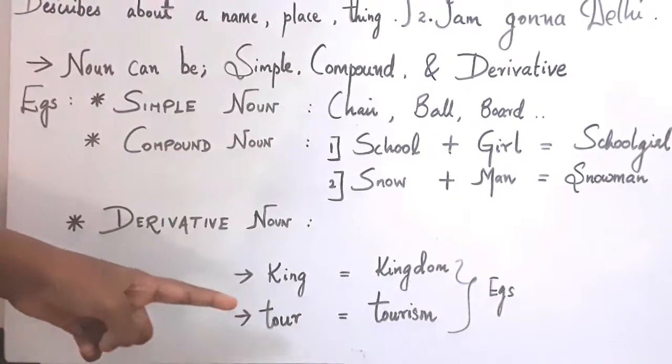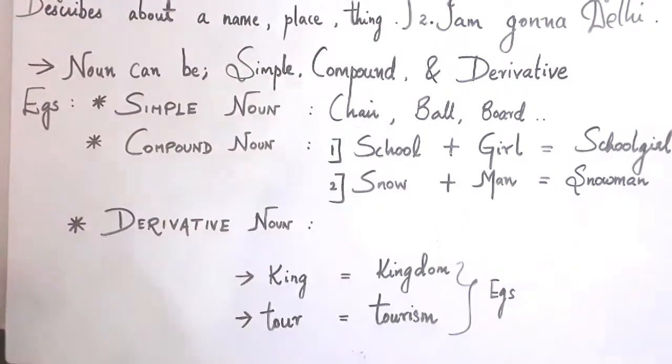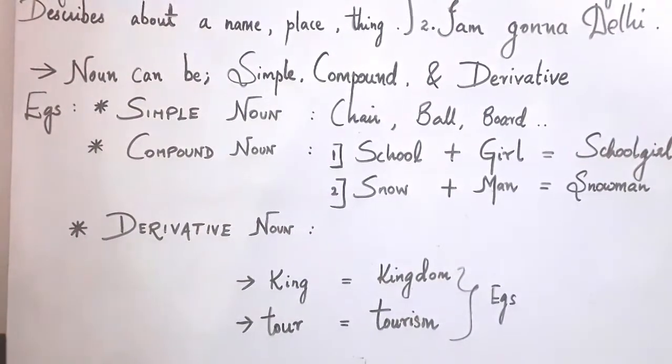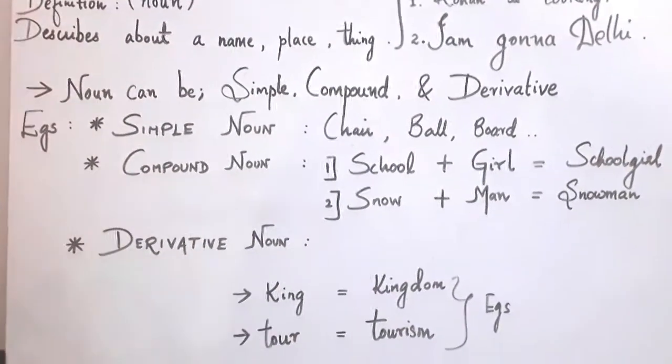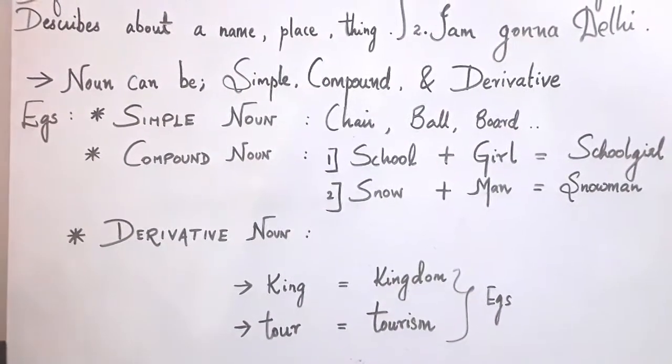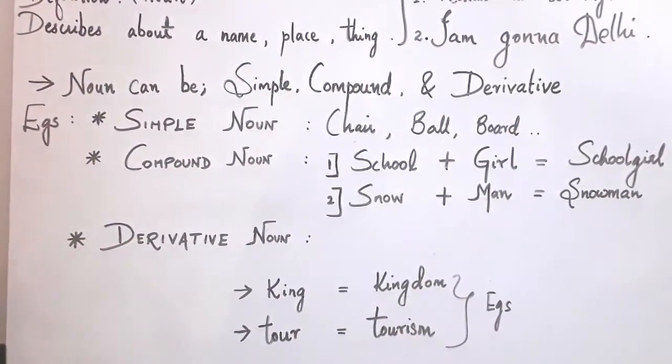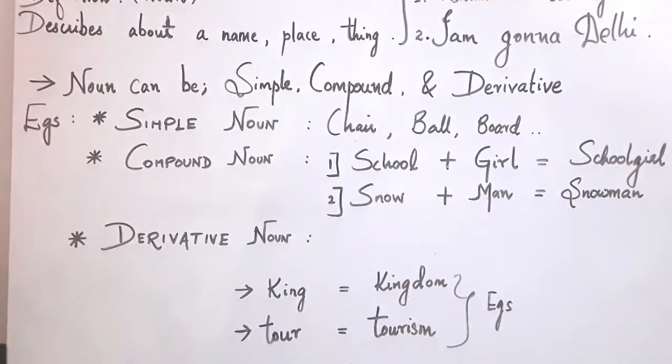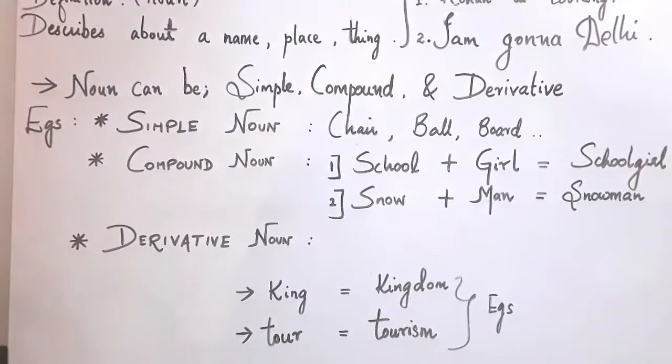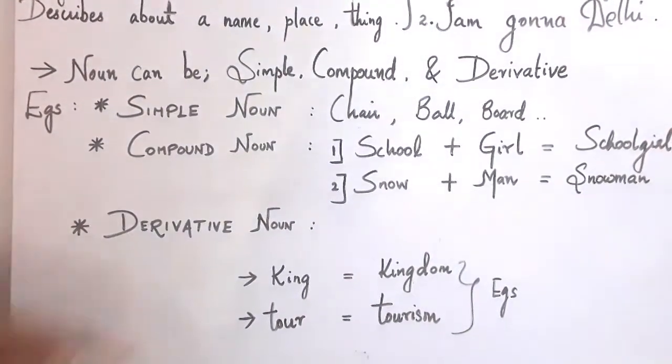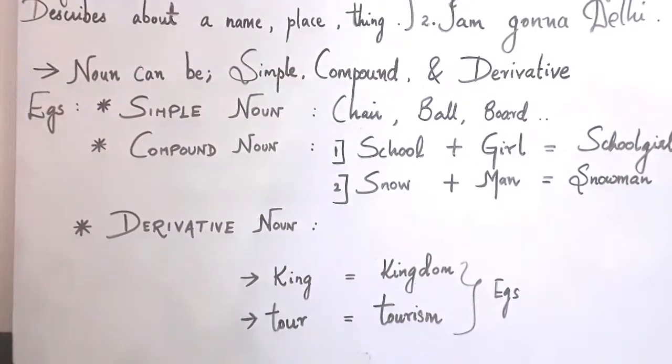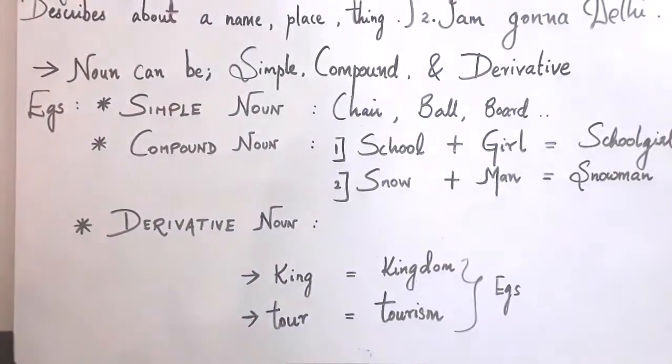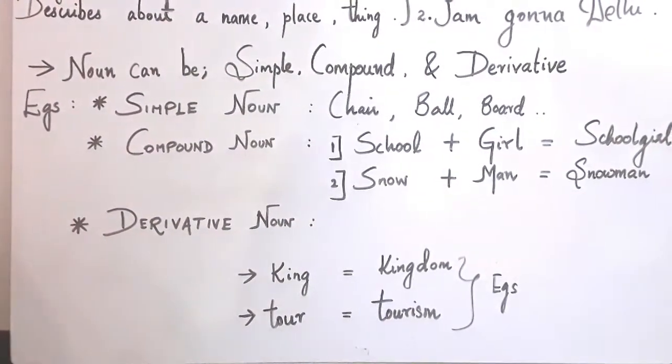The second one is tour plus I-S-M, which becomes tourism. These are two examples of derivative nouns. To repeat, derivative nouns are words that are derived from other words to form a new noun. King plus the suffix becomes kingdom, and tour plus the suffix I-S-M becomes tourism.